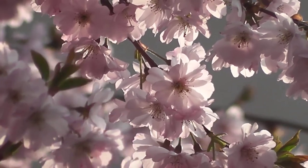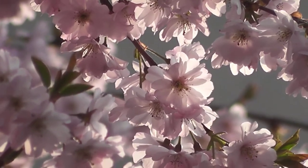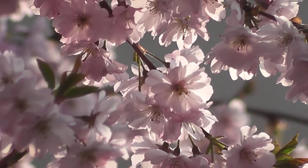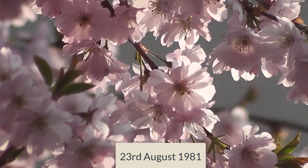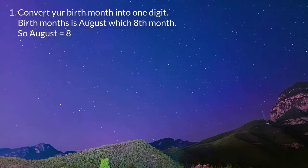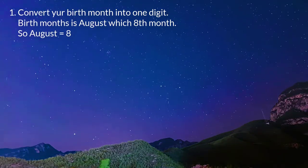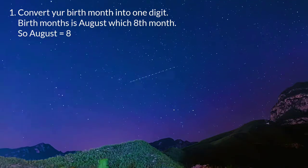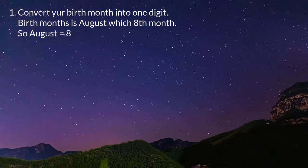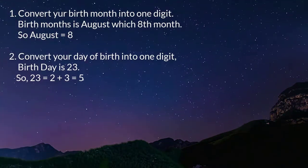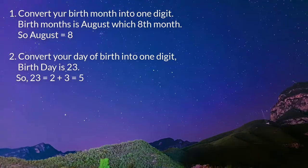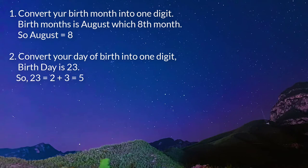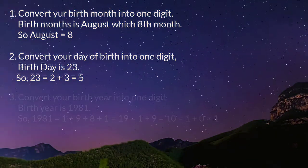Here is the method to calculate life path number. Example 1: Follow the steps to calculate someone's life path number whose birthday is August 23rd, 1981. Step 1: Convert your birth month into one digit. Birth month is August, which is the 8th month. So August equals 8. Step 2: Convert your day of birth into one digit. Birthday is 23rd. So 23 equals 2 plus 3 equals 5.